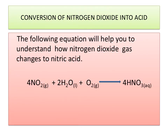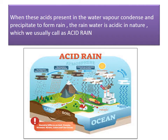Conversion of nitrogen dioxide into acid: the following equation shows how nitrogen dioxide gas changes to nitric acid: 4NO₂ + 2H₂O + O₂ → 4HNO₃ (nitric acid). When these acids present in water vapour condense and precipitate to form rain, the rain water is acidic in nature, which we usually call acid rain.